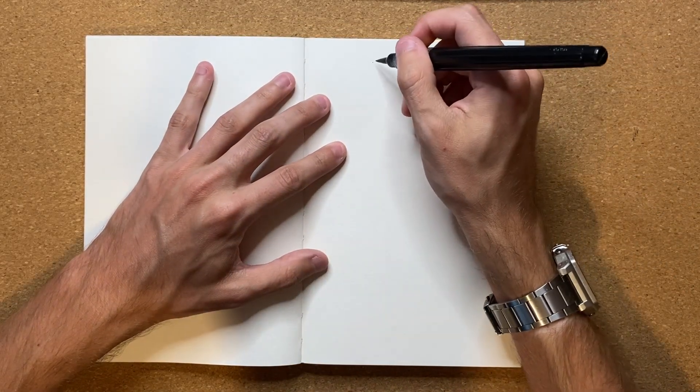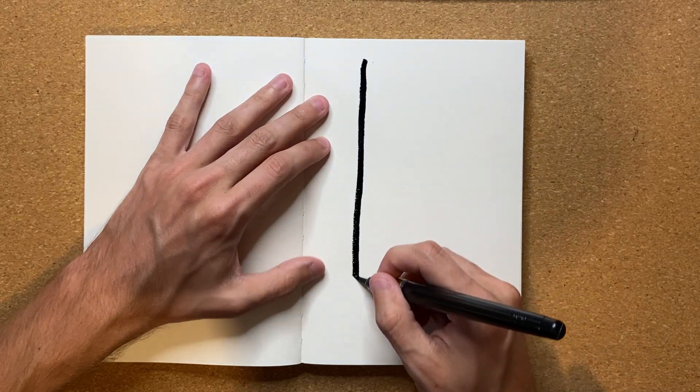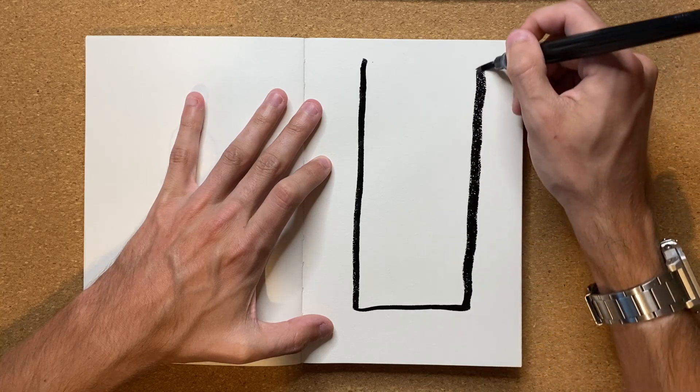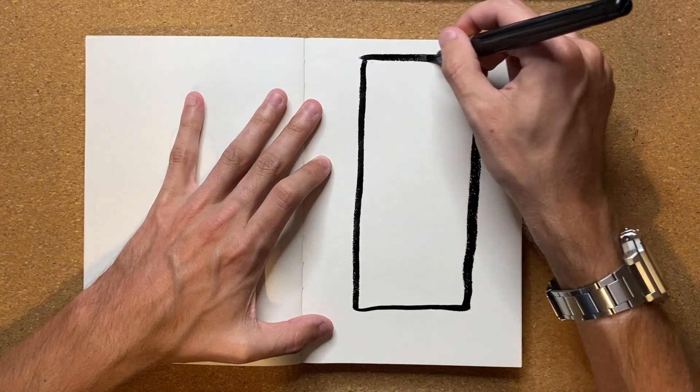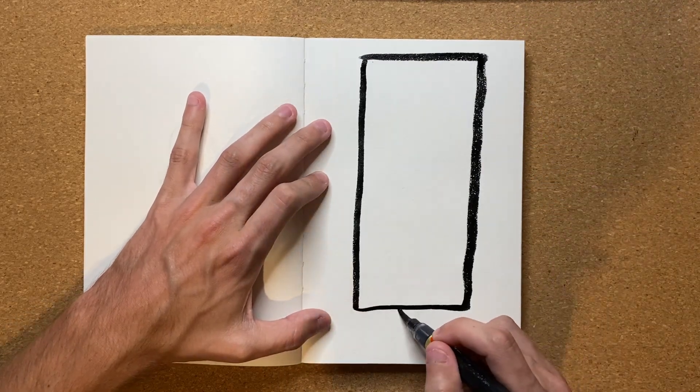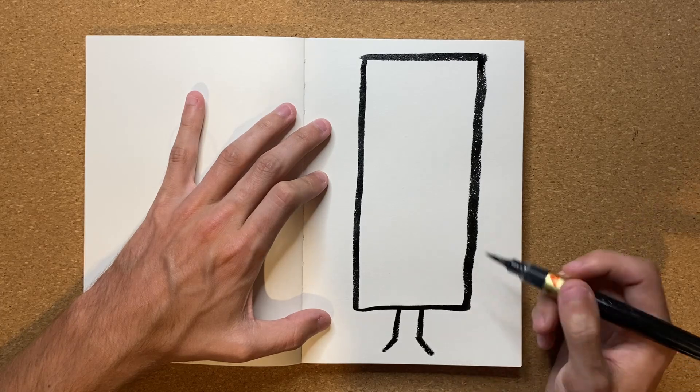And let's go ahead and start off by drawing the rectangle just like this. There we go. There is the rectangle. I'm gonna go ahead and give it some feet and legs.